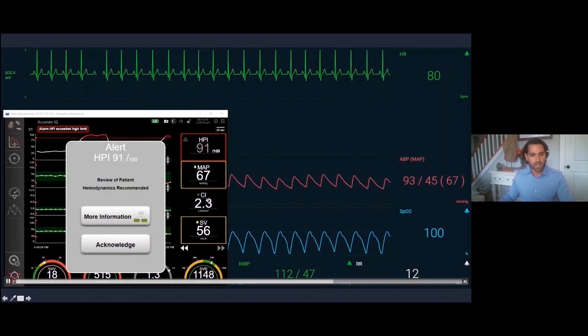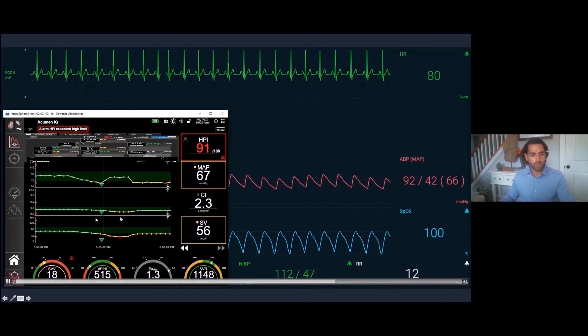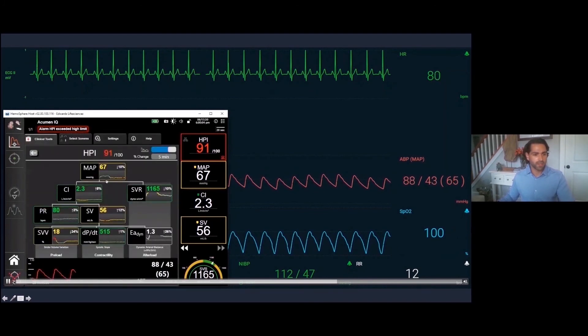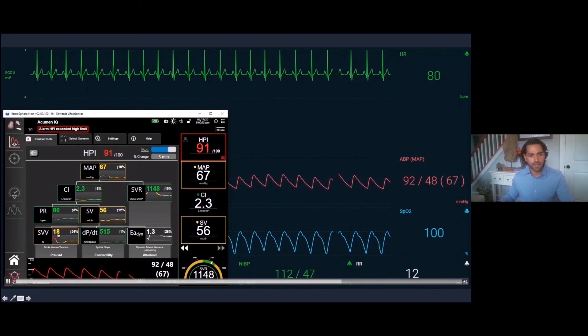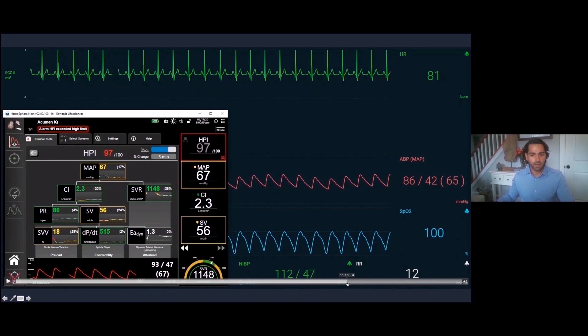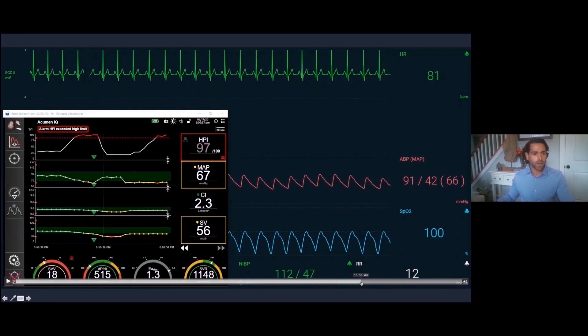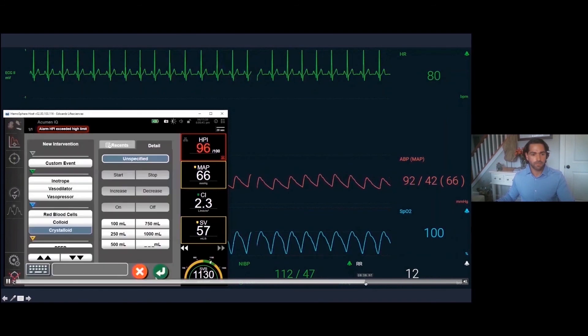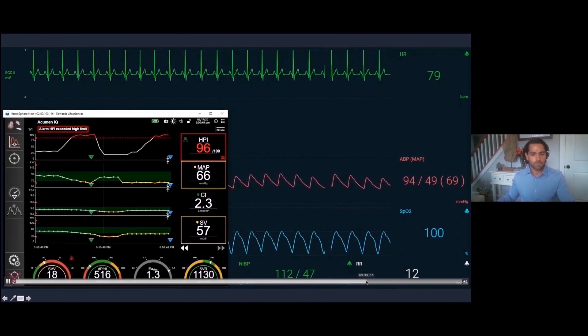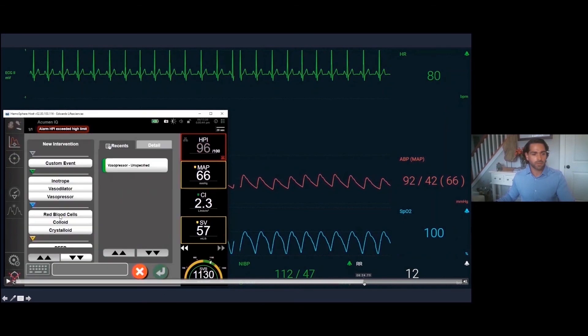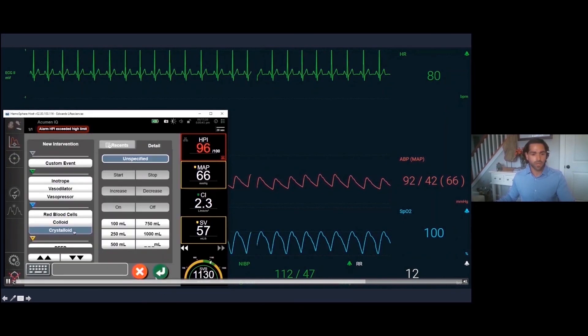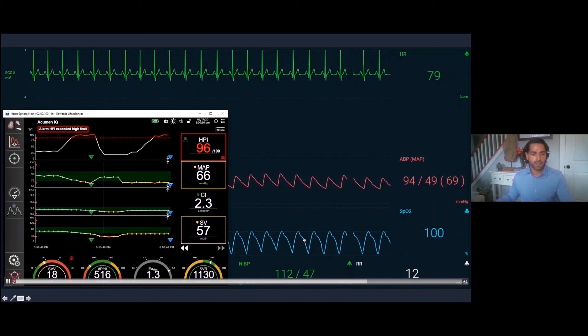Now we're actually hypotensive. Our index is okay, stroke volume is low, SVV is high. We're going to click more information again. Looking at the same secondary screen, MAP 67, stroke volume variability is now 18, stroke volume is 56. We're now going to treat these numbers. Our provider picks an intervention. This time we're going to pick crystalloid and see if that's the appropriate response to volume that this patient's going to have.